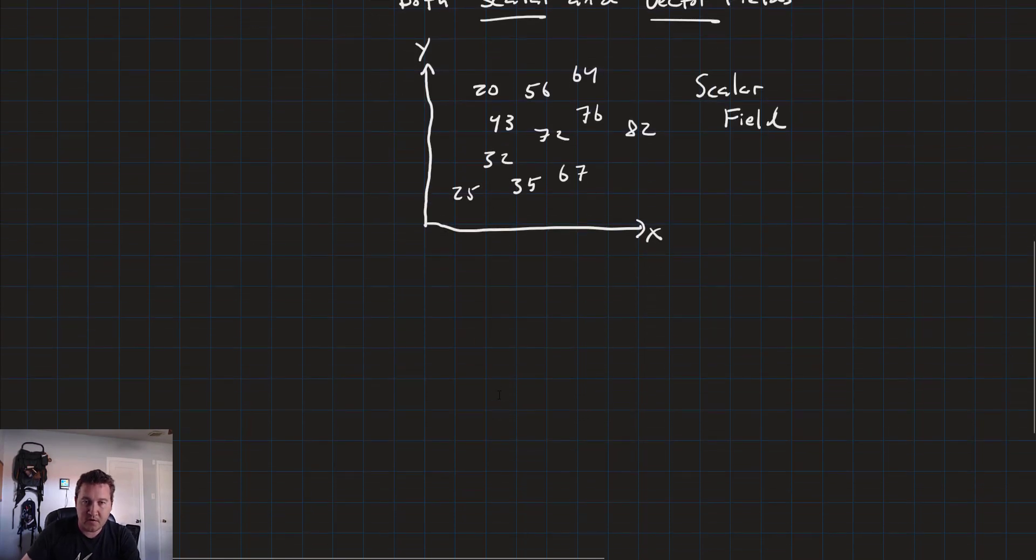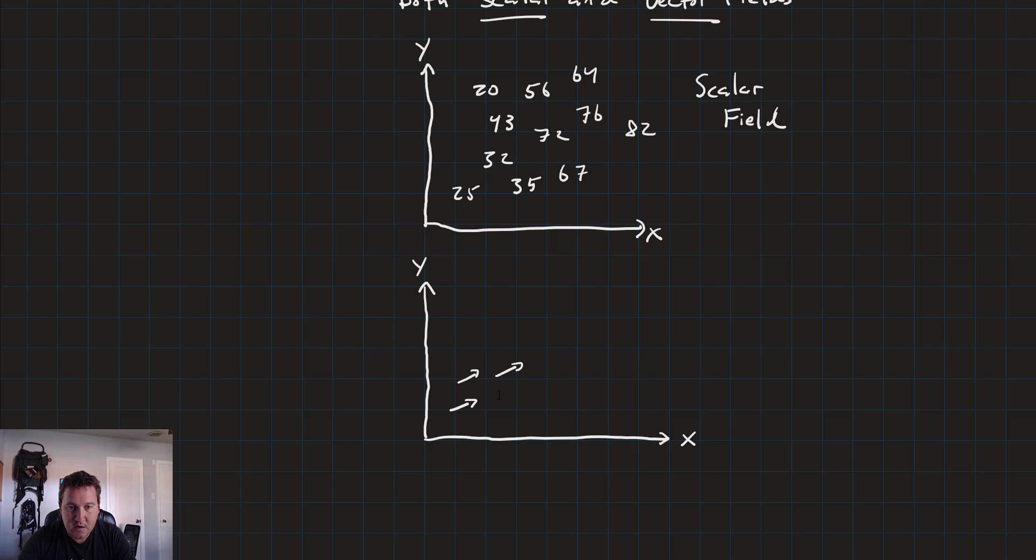A vector field looks a little something like this. It's going to be vectors laid out in the field. We usually use arrows to represent these guys graphically, so you might get something that looks like this.